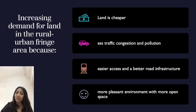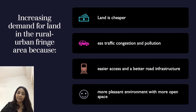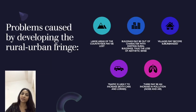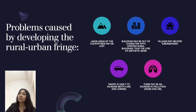Fourth is a more pleasant environment with more open space and greenery, as large tracts of land are available. So these areas are attracting more and more people to come and settle, and because of that the problems of rural-urban fringe are also increasing.